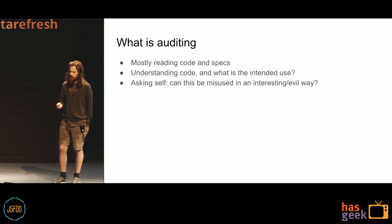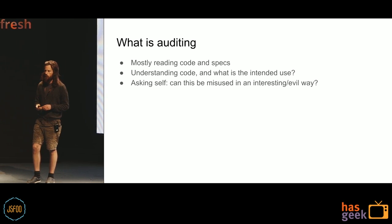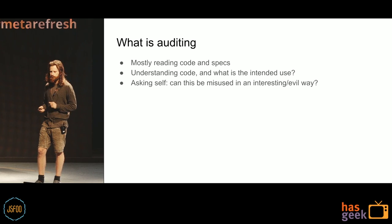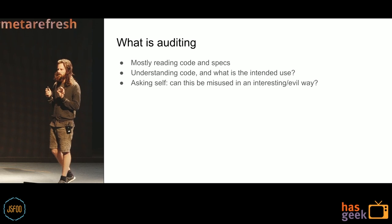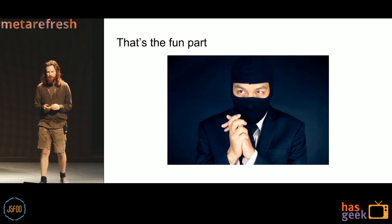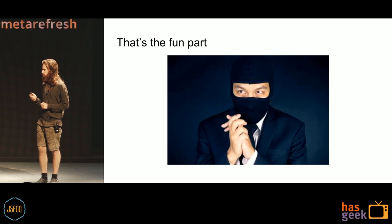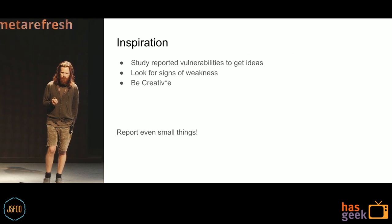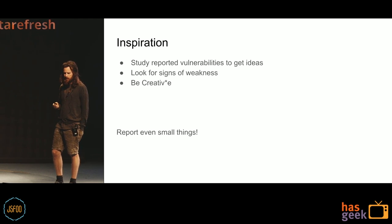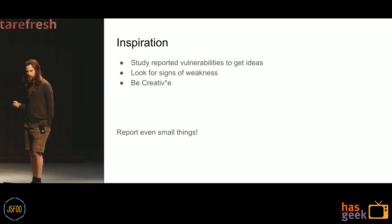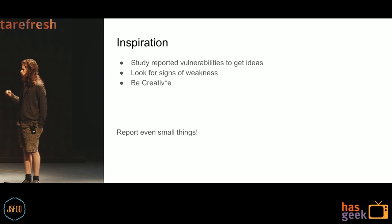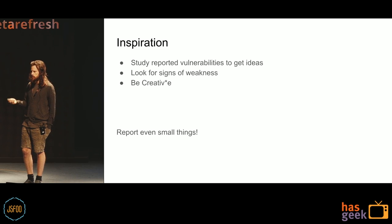How we focus on knowing in computer security is by auditing. Auditing is mostly reading the code and specs, understanding the code and its intended use, and then asking yourself: can this be misused in an interesting or evil way? That's the fun part. The best thing a security auditor can tell you is that it wasn't very interesting to audit your code — that means you did a good job. It's also very important to study reported vulnerabilities to get ideas about ways things might be attacked. There's a lot of material out there in the security community to be studied.